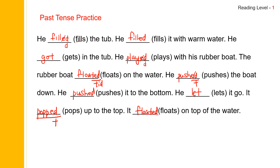This time I'm going to read it a little bit faster. He filled the tub. He filled it with warm water. He got in the tub. He played with his rubber boat. The rubber boat floated on the water. He pushed the boat down. He pushed it to the bottom. He let it go. It popped up to the top. It floated on top of the water.